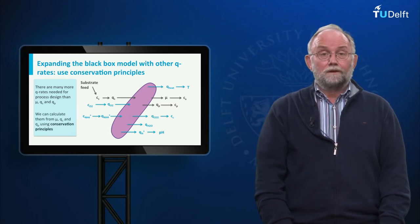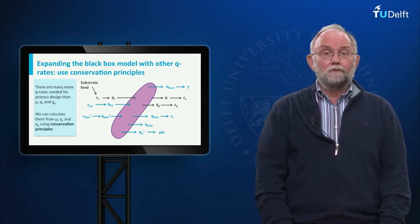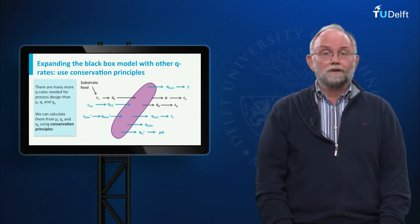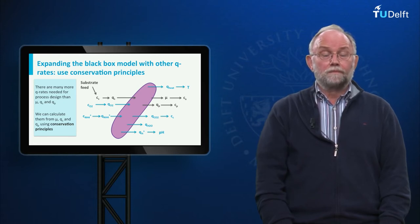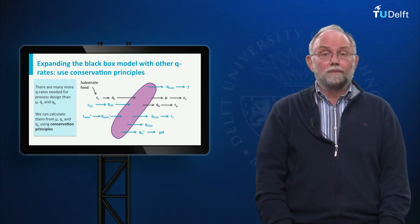The crucial understanding is that you only have to apply conservation principles of elements, charge, and energy to obtain all the other Q-values from Qs, mu, and Qp, which of course are available from the aerobic black box model.